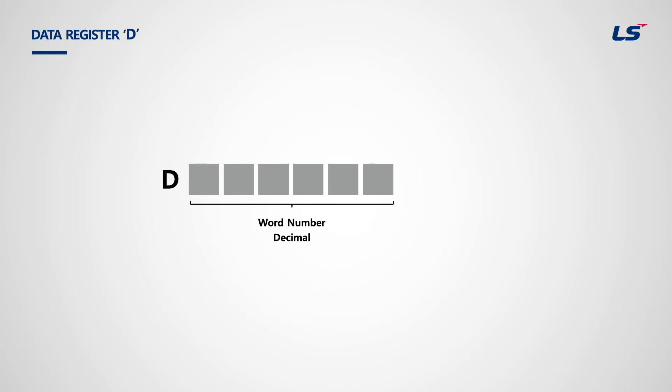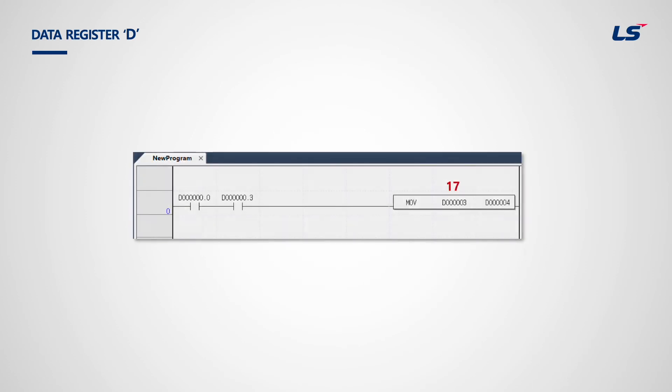The word area is different from bit devices. It is expressed in word numbers only, not used in contact point areas, and is used for calculation and storage of numeric data. However, if users need to use the word area as a bit, they use a period with a hexadecimal value to express the bit. For example, D3 word data is transferred to D4 when D0.0 and D0.3 bits are on.